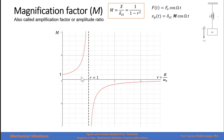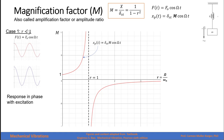Let's analyze three cases. Case 1 is when r is less than 1. The response is in phase with the external force — only the amplitude changes. The response amplitude is the static deflection (F0 over k) times the magnification factor, while the force has amplitude F0.